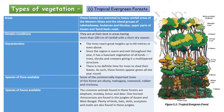First, the tropical evergreen forests. These forests are restricted to heavy rainfall areas of the Western Ghats and the island groups of Lakshadweep and the Andaman and Nicobar Islands, upper parts of Assam, and the Tamil Nadu coast. Climatically, they are found in areas having more than 200 centimeters of rainfall with a short dry season.